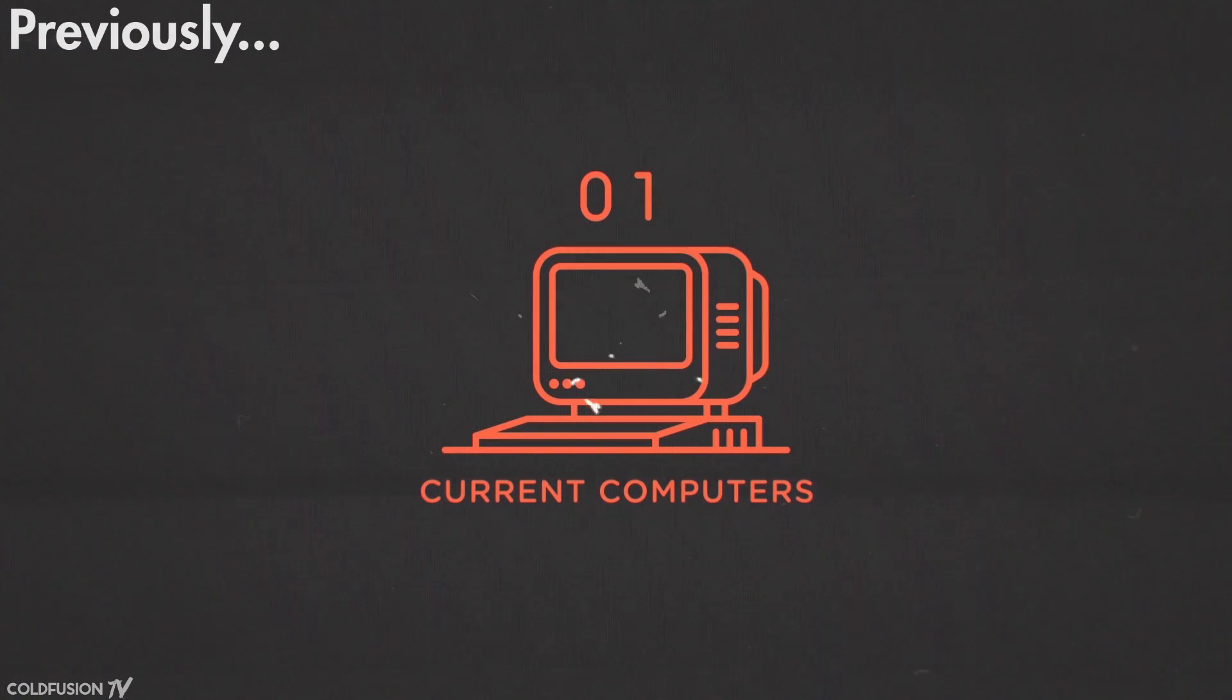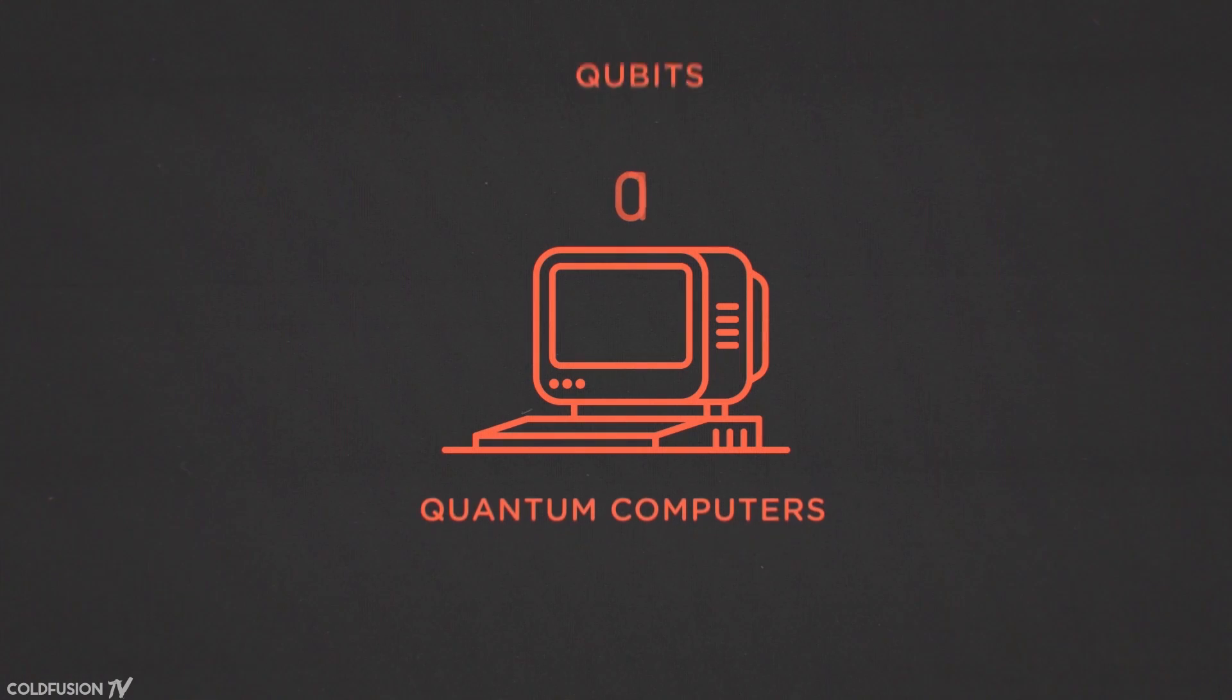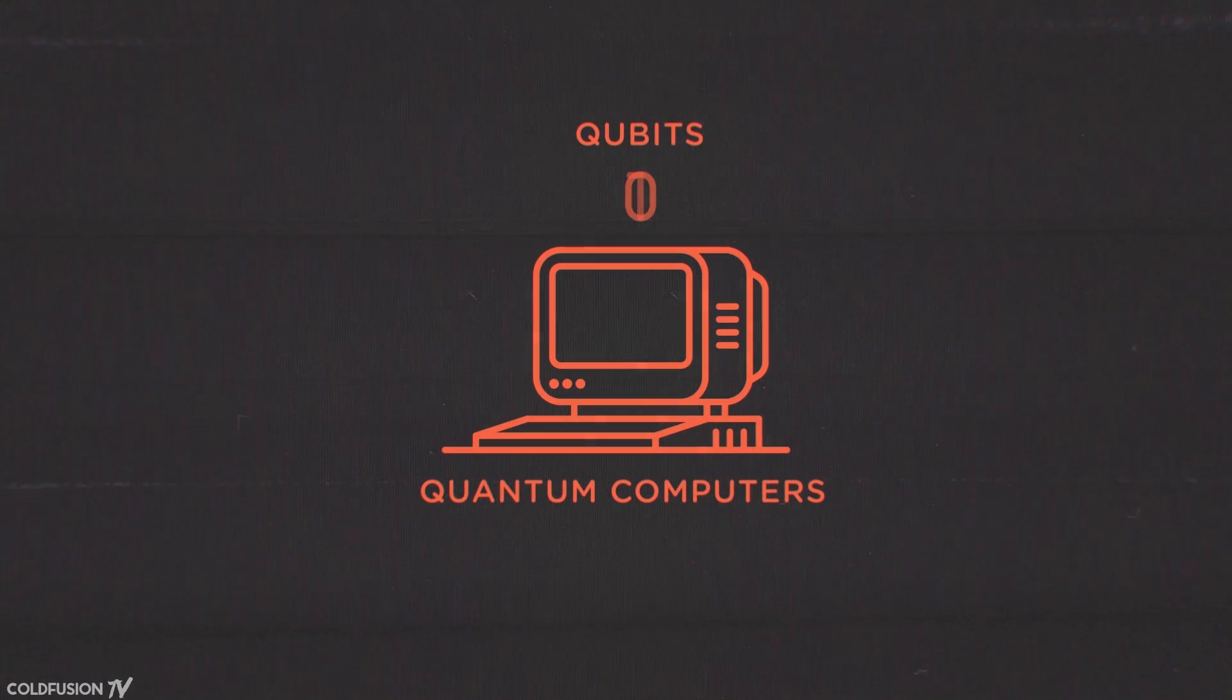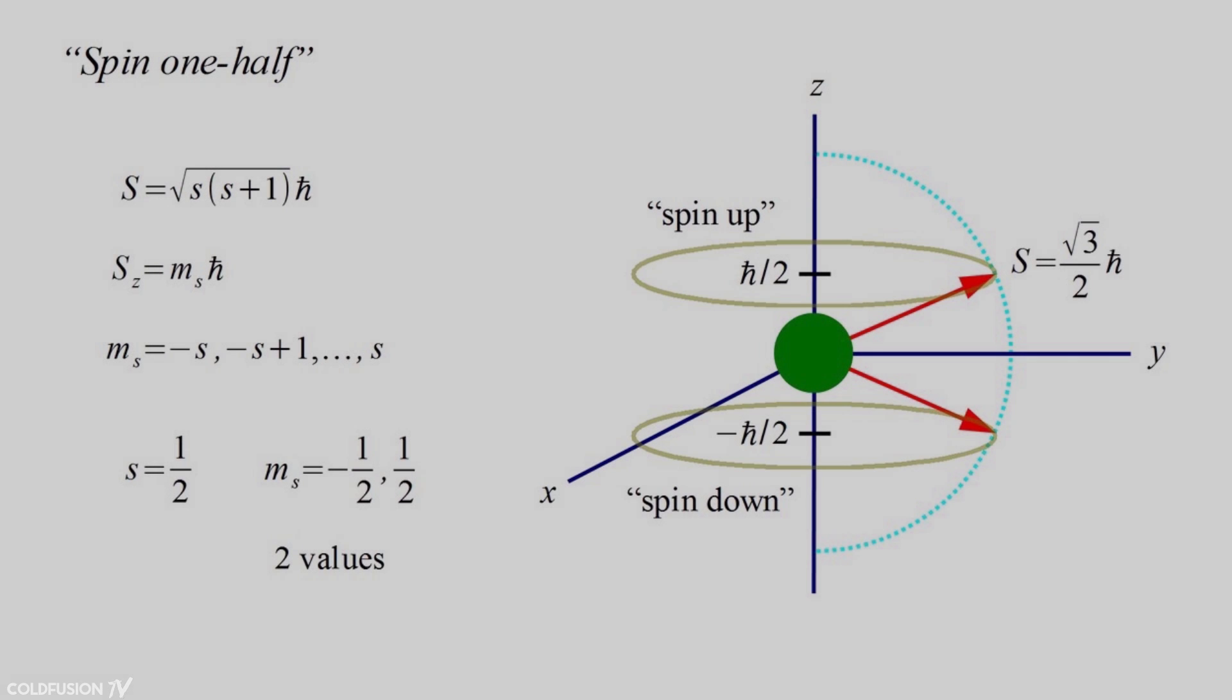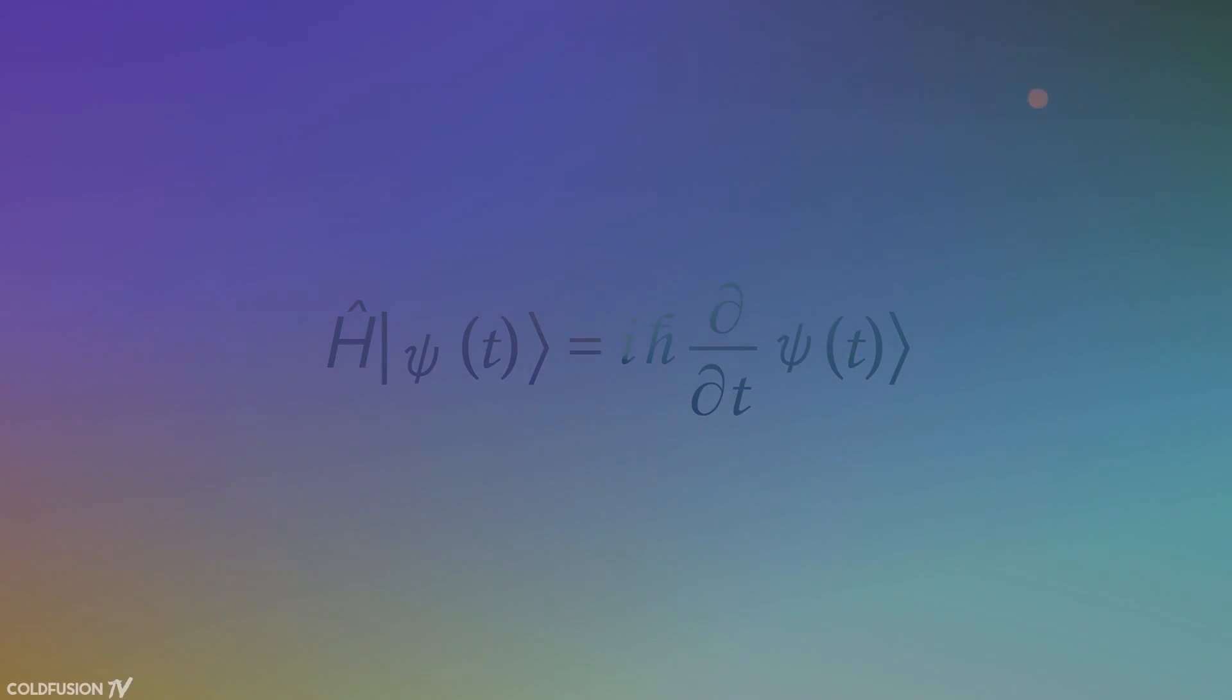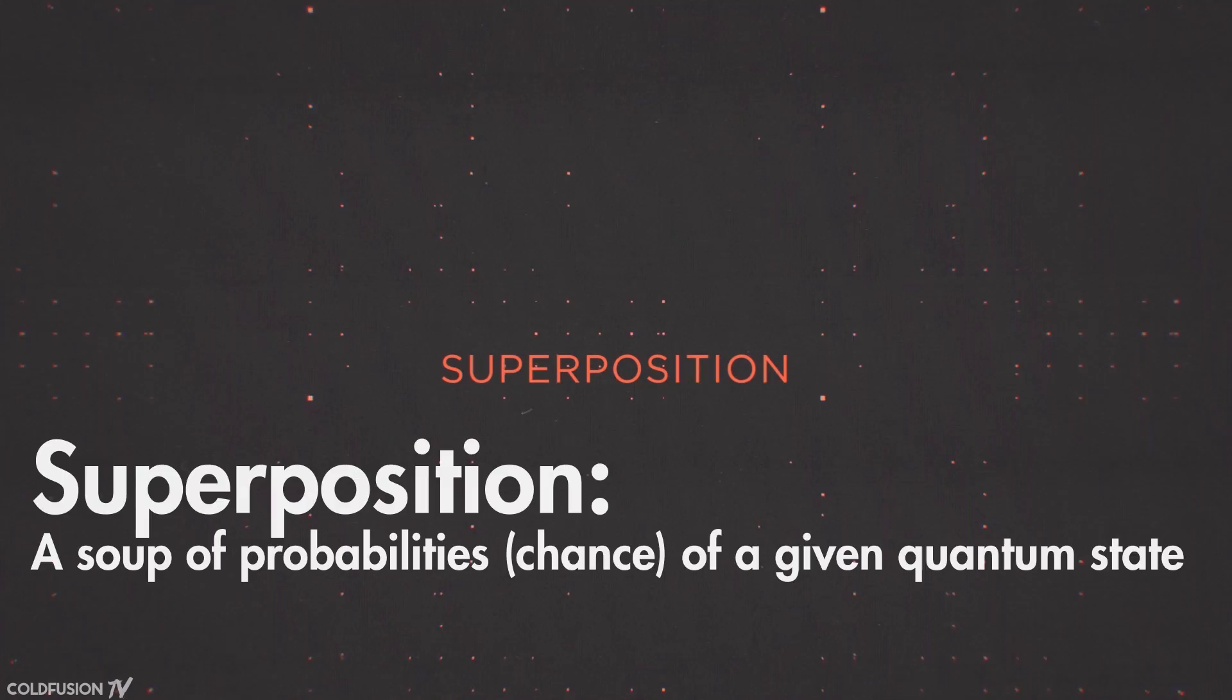We covered that regular computers process data as binary bits, represented either as a 1 or a 0. A quantum computer's equivalent data is known as quantum bits, or qubits, which can exist in both 0 and 1 states at once, allowing multiple computations to happen simultaneously. These states in a particle are called spin, but there's really no need to know what that is for the purpose of this video. This simultaneous state of both 0 and 1 is like a kind of soup of probabilities, called a superposition. This makes it possible to store and manipulate vast amounts of information with a relatively small amount of particles.